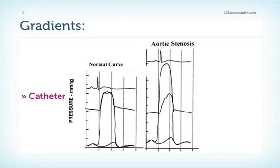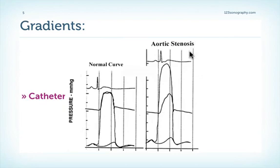In the cath lab, we can directly measure the pressures in the left ventricle and in the aorta, either simultaneously or by pullback method of the catheter. These are the simultaneous tracings of the left ventricle — look at the high pressure — and in the aorta. The peak-to-peak gradient, which is frequently measured in the cath lab, is not a physiological or real measurement. It does not represent the actual pressure of the left ventricle and aorta at the same time, and it is usually lower than the maximum or peak instantaneous gradient measured by Doppler echo.